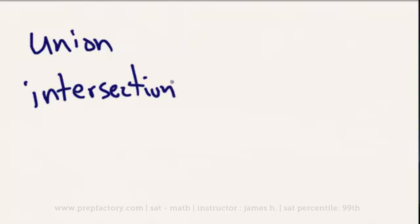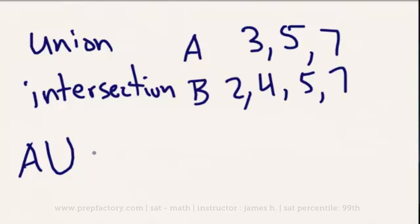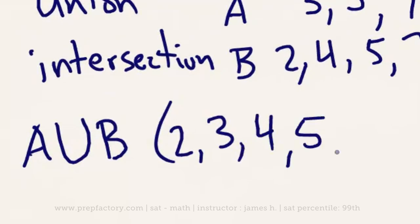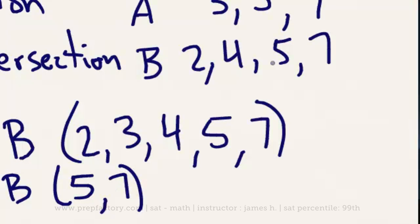Let's say we have one set with the numbers 3, 5, and 7, and another set with the numbers 2, 4, 5, and 7. The union of these two sets would just be the combination of numbers that appears in either set — no repeats. If we call this set A and this set B, the union of A and B, which you'll sometimes see described with a symbol like a U, would be 2, 3, 4, 5, and 7. The intersection of two sets — the set of numbers that appear in both sets — denoted by an upside-down U symbol, would only be 5 and 7, because those are the only two numbers that appear in both sets.